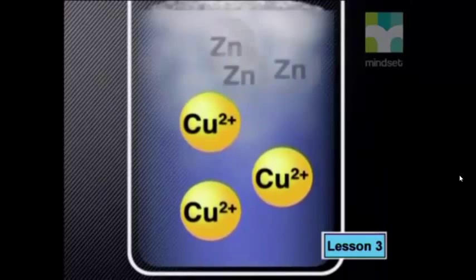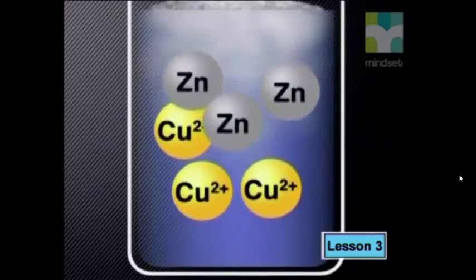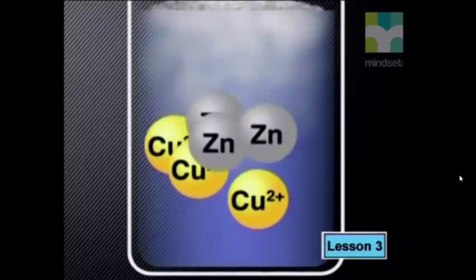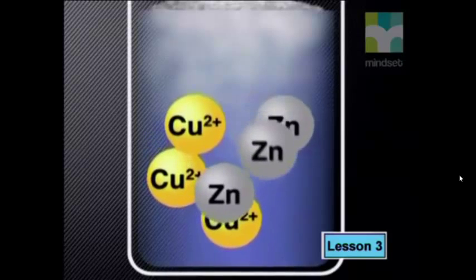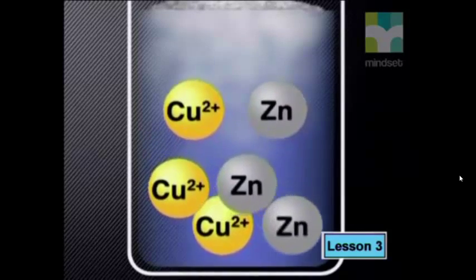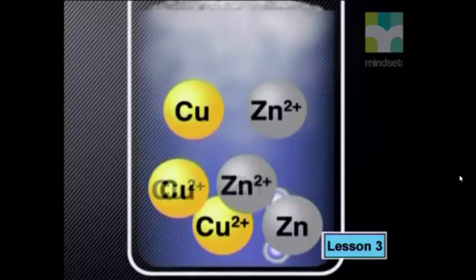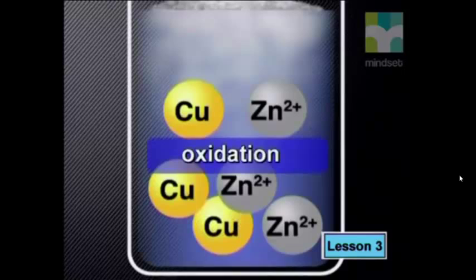But wait — something else happened to the zinc in this reaction. If the zinc atom donated two negative electrons to the copper, thus becoming an ion, it must have lost some of its negative charge and become more positive by the same amount: 2. When an oxidation number becomes more positive, indicating that electrons have been lost, we call this process oxidation. Oxidation doesn't take place by itself — something needs to persuade the electrons to move away from the zinc atom. This substance is called the oxidizing agent.